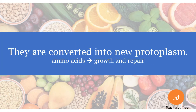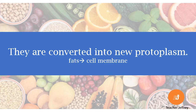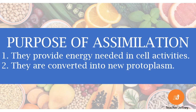Second, they are converted to new protoplasm — the living matter in the cells of the body. Amino acids are used for growth and repair of worn out parts of the body. Another digested food product used to build new protoplasm are the products of fats. They are used to build new protoplasm. These are the purposes of assimilating digested food products in the cell: they provide energy needed in cell activities and they are converted into new protoplasm.